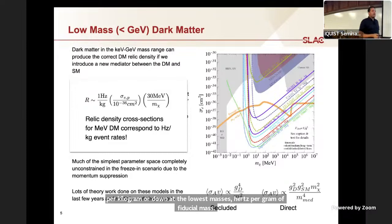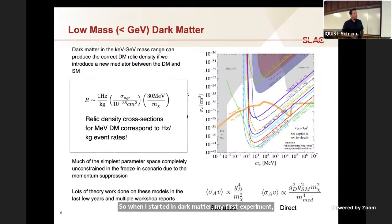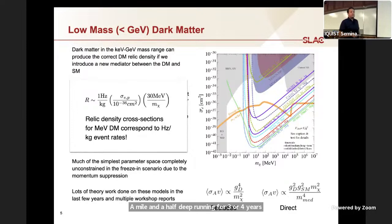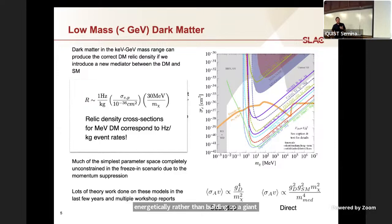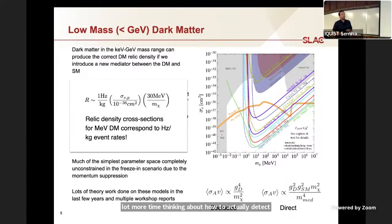When I started in dark matter, my first experiment, we were working with 30 kilograms of germanium in a mine a mile and a half deep, running for three or four years, expecting to see one event. Now we're talking about things you can do in a basement lab with a dilution fridge and some lead blocks, and really the challenge is getting to the point where you can see these events energetically rather than building up a giant experiment and running for a decade. As someone who really likes the microphysics of sensors, this is very exciting for me, and it allows you, in a smaller group, to spend a lot more time thinking about how to actually detect interesting types of events.